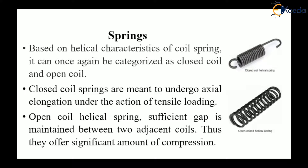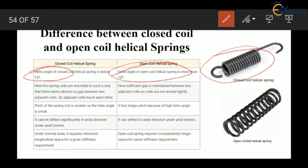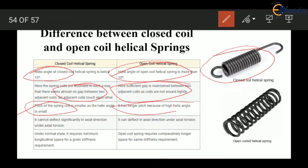Let us discuss the main differences between closed coil and open coil helical springs. One difference is the helix angle. In a closed coil helical spring the helix angle is less than 10 degrees, while in an open coil spring the helix angle is larger than 10 degrees. Also, there is no gap or very small gap between coils in closed coil springs, while there is a large gap in open coil helical springs. Because of the low helix angle and small gap, closed coil helical springs have a small pitch, while open coil springs have a large pitch.